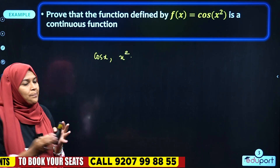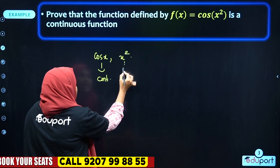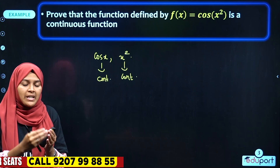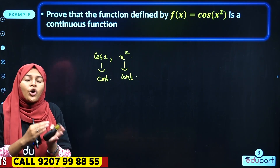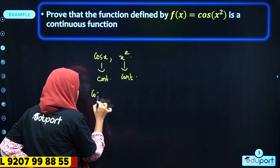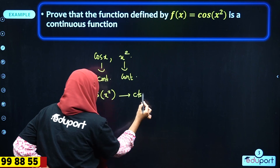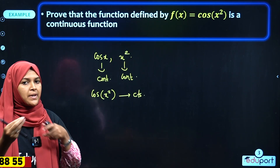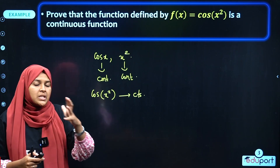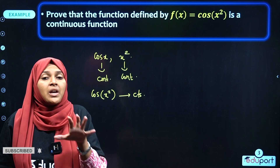Two different continuous functions — cos(x) is a continuous function and x² is a continuous function. The composition of two continuous functions is also continuous. That is why cos(x²) is a continuous function. This composition property makes the statement correct.